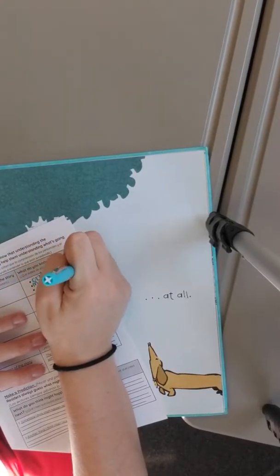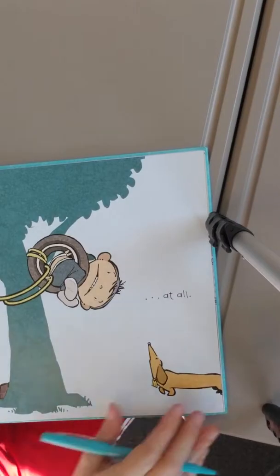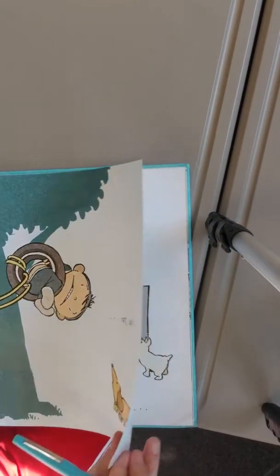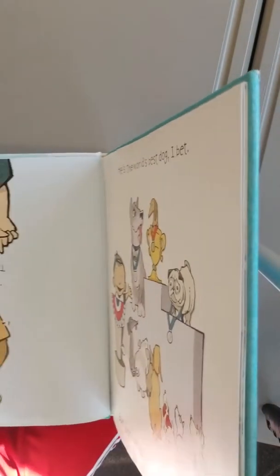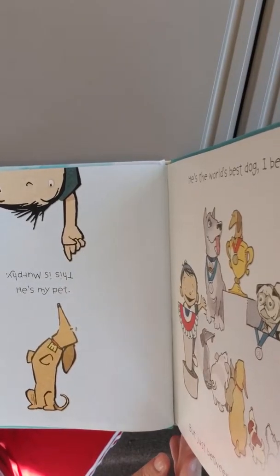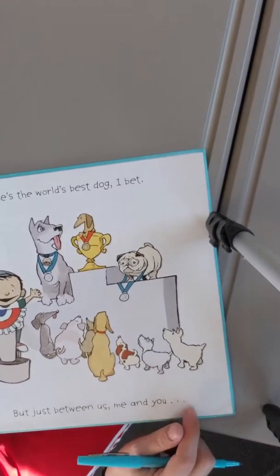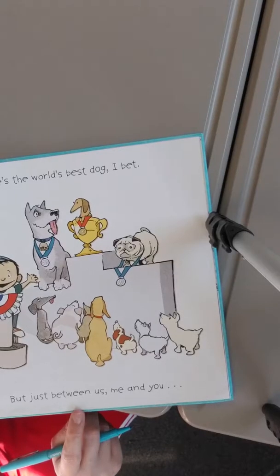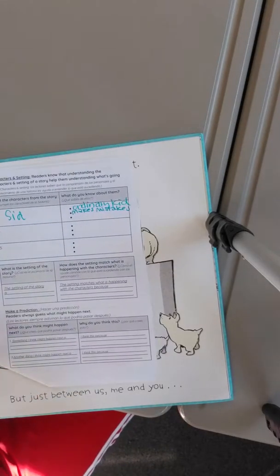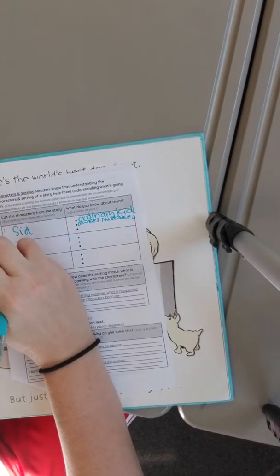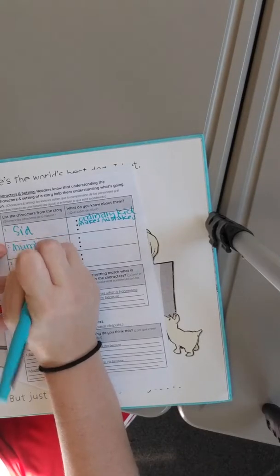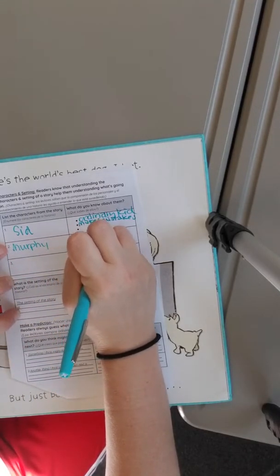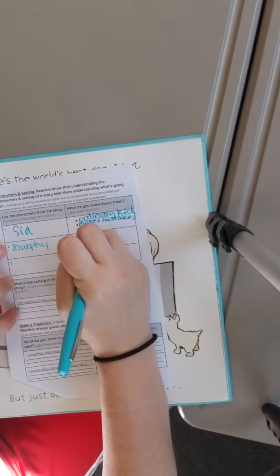This is Murphy, he's my pet. He's the world's best dog, I bet. But just between us, me and you. Before I go, here I'm gonna go ahead and write Murphy down because that's the dog's name. Murphy, Sid's dog, best dog.